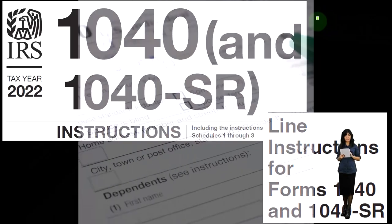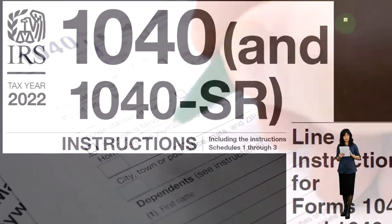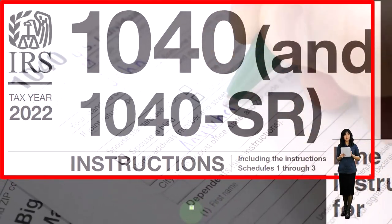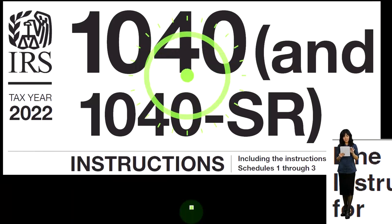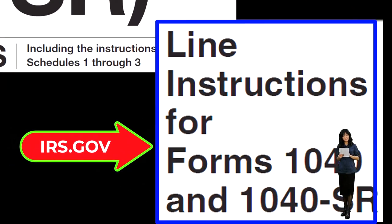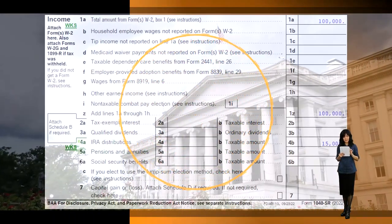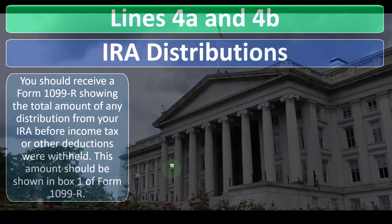We're now focused on the IRA and whether or not we have income with relation to an IRA. Most of this information is going to come from the Form 1040 Instructions for Tax Year 2022 line instructions, which you can find at the IRS website, irs.gov. On the first page of the Form 1040, we're focused here on line four.